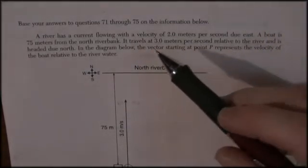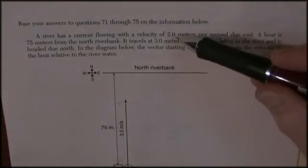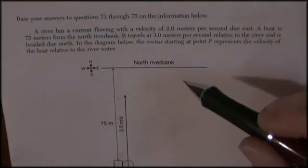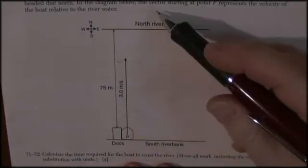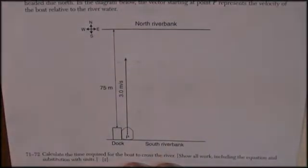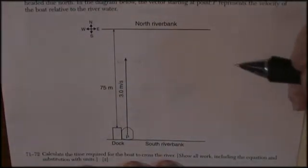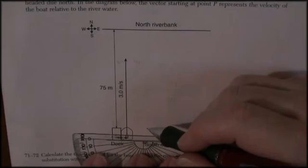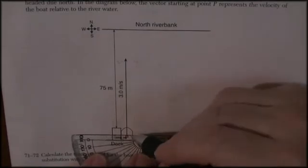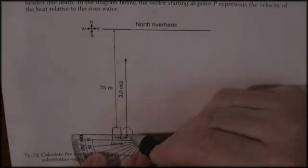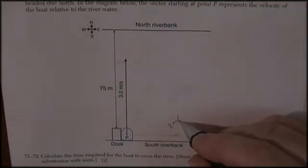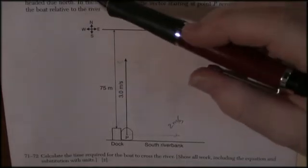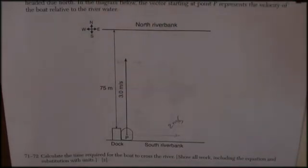A river has a current flowing with a velocity of two meters per second due east. So here we've got the north bank and the south bank of a river. Due east is two meters per second, going this way. A boat is 75 meters from the north riverbank, so 75 meters total distance.